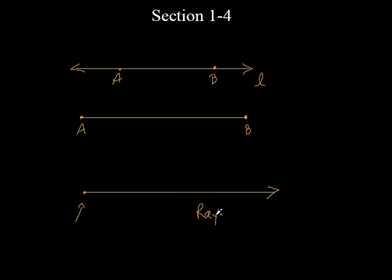Anybody know? It's called a ray. So this was a line, this was a line segment. This is called a ray. What does a ray do? It has one endpoint. A line segment has two endpoints. How many endpoints does a line have? None — it doesn't have any endpoints; it keeps going in both directions. So a ray starts and it keeps on going. That's a ray.